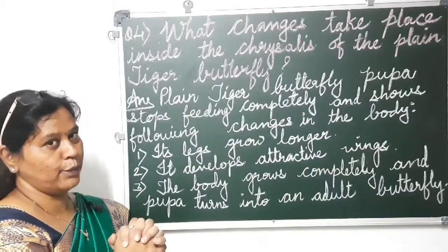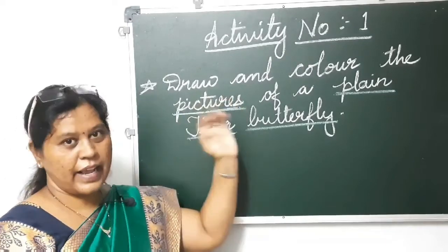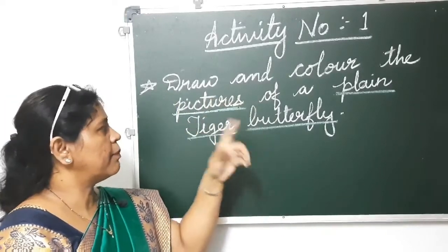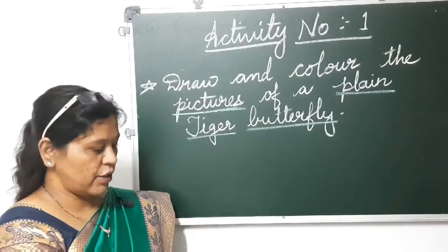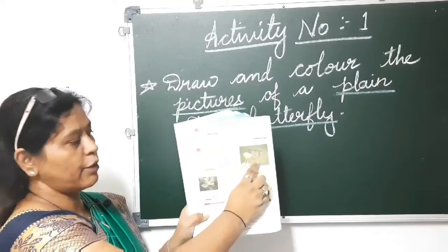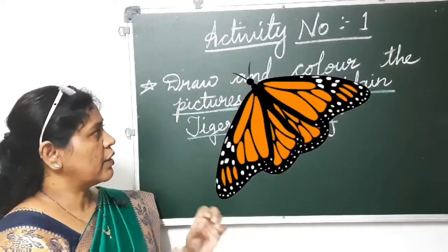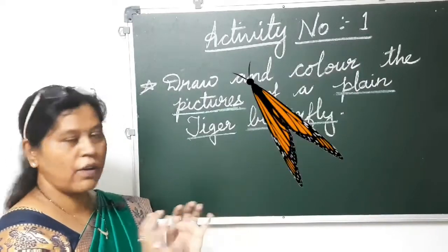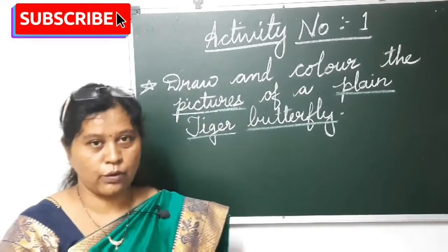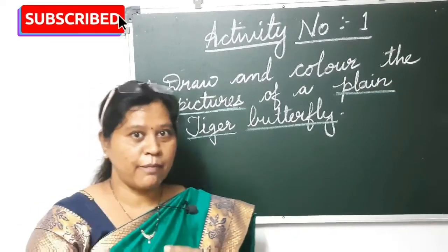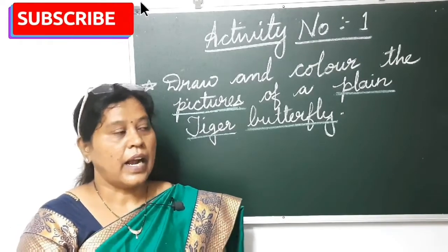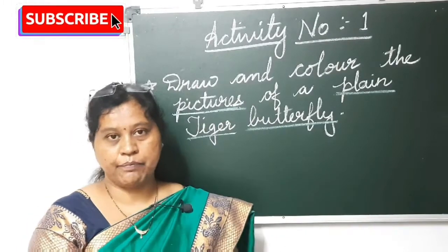Now the last one is an assignment. What you have to do is draw and color the pictures of a plain tiger butterfly. The plain tiger butterfly picture is given in your textbook on page number three. You can draw that one or another butterfly, but it should be a plain tiger butterfly. Draw it in your notebook. It has been almost four and a half months we are at home due to lockdown. It is a high time, my dear students — take your studies a little seriously and complete all your notebooks.